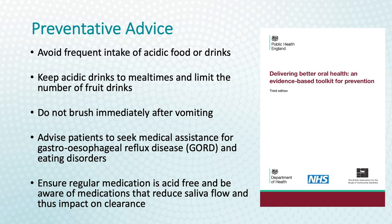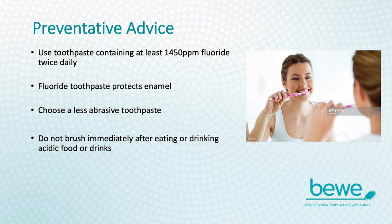Preventive advice for patients at risk of erosive tooth wear is also included as part of the Delivering Better Oral Health evidence-based toolkit. Advice includes being aware of the frequency of intake, the need to avoid brushing after vomiting, and being aware of regular medications which may be acidic. The oral hygiene advice in the toolkit includes the use of fluoride toothpaste to protect enamel, which is low abrasive in nature. Ideally, you should not brush immediately after eating or drinking acidic food or drinks, but if this is the only time you can brush your teeth, then brush your teeth. Preventive advice should be targeted at reducing the frequency of dietary acid intake.